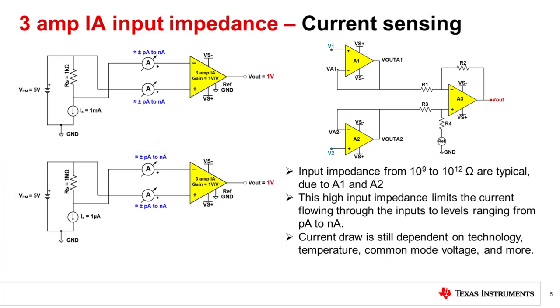This is due to the input impedance of the 3-amp IA. Remember the rule of thumb that the IA input impedance should be significantly greater than the source's output impedance? Well, in a 3-amp IA, values of input impedance from 10 to the 9 to 10 to the 12 ohms are typical. This high input impedance is due to the input stage amplifiers A1 and A2, which limit the current flowing through the inputs to levels ranging from picoamps to nanoamps.